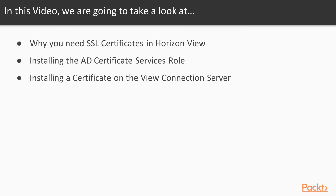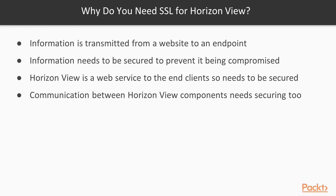In this video, we're going to start by looking at why you need to deploy SSL Certificates in your Horizon View environment. Then we will go through the configuration process, including setting up a root CA for use in the lab environment, before then installing a certificate onto the view connection server. If you are transmitting sensitive information from a website to an endpoint device you need to secure the information with encryption, otherwise data could become compromised. As Horizon View is essentially like a web service to which end users connect from their endpoint device to the view connection server, you need to ensure that this connection is secured.